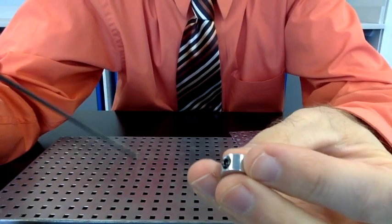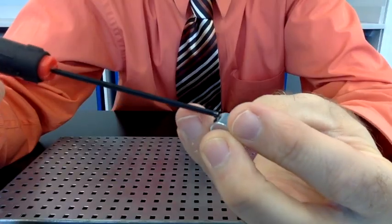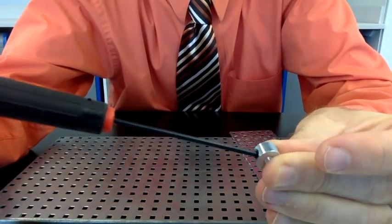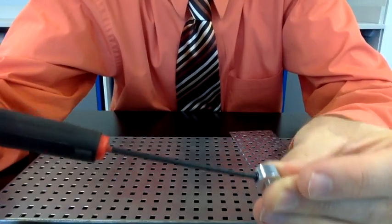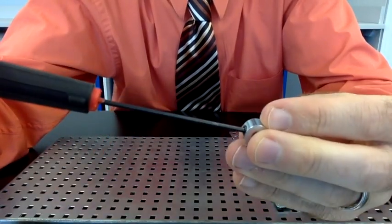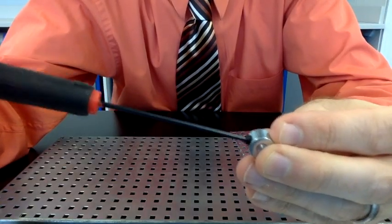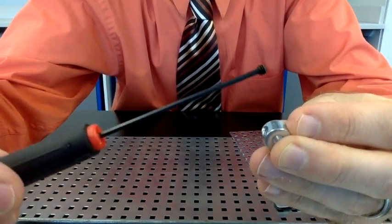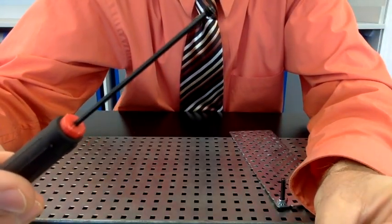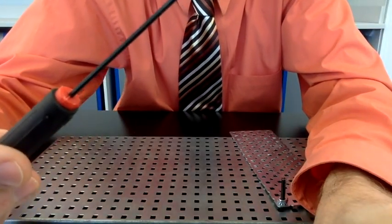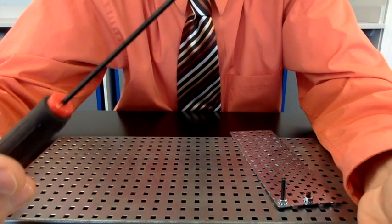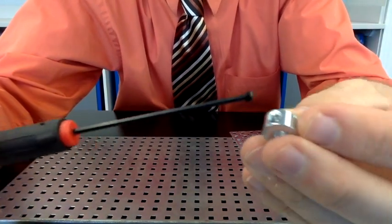When using the collars, be sure you do not over tighten. Just make it tight. Once you feel resistance, you can stop tightening. Also, make sure that when removing the collar, you do not remove the entire set screw. They are very small and hard to find on the floor. If you pop a set screw out, just put it back in.